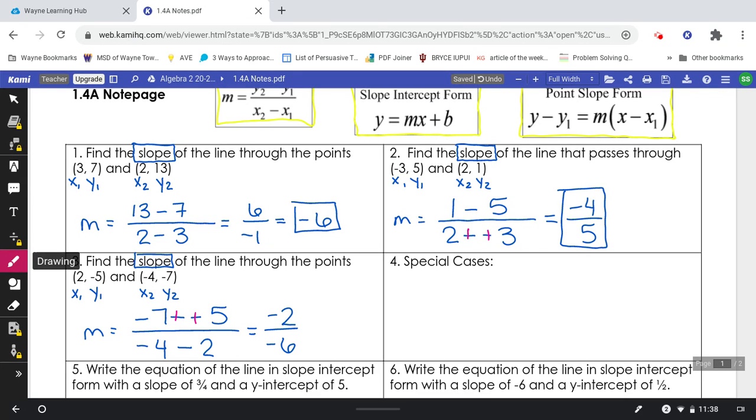Negative 2 over negative 6. Again, you have that double negative. So these two will turn positive. And then you can reduce the fraction to 6. Both of them can be divided by 2. So you get a final answer of 1 over 3. Slope of 1 third.